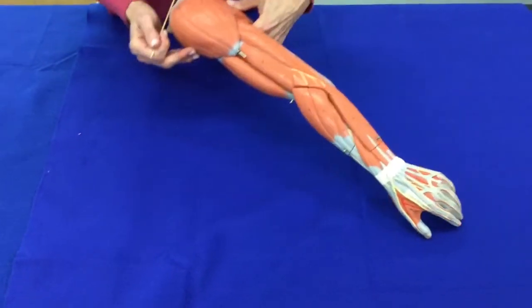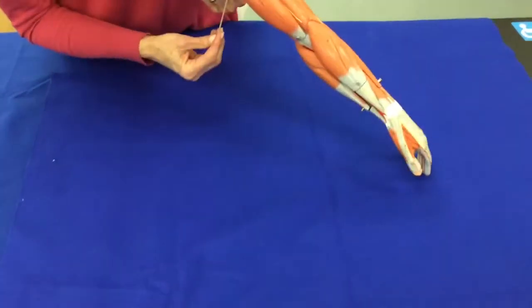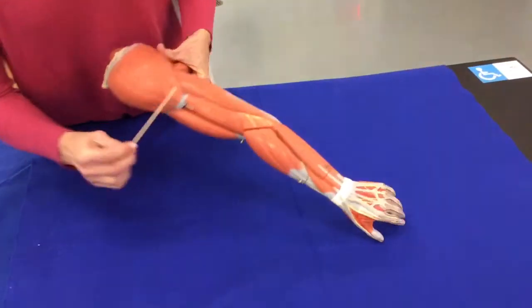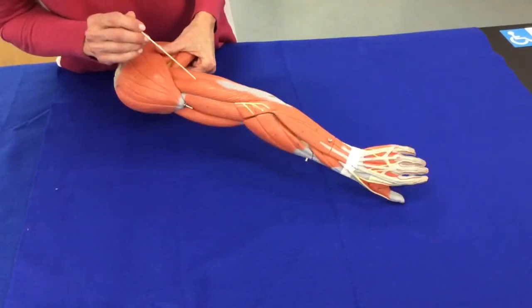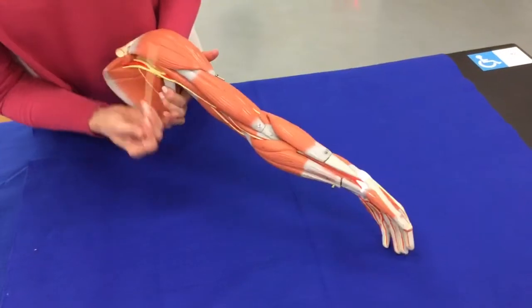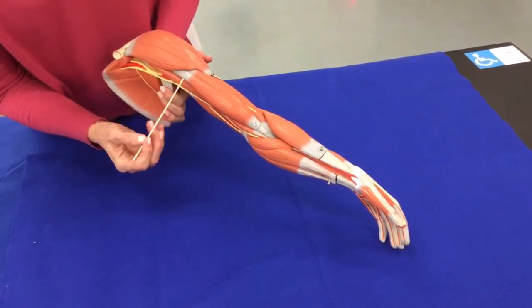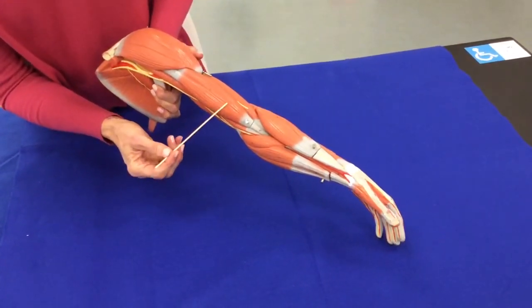Now if we look at the arm we can see the back of the arm and the front of the arm. The muscle on the back of the arm is called the triceps brachii and then on the front of the arm, anterior to the humerus, there are two muscles.